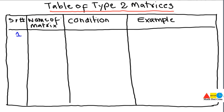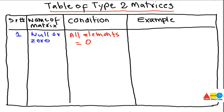Now let's discuss the Type 2 matrices, where we apply operations on the elements of the matrices. The first Type 2 matrix is the null or zero matrix. The condition is that all elements or entries must be equal to zero. It is denoted by O. A null matrix can be of any order — the order is not restricted. All its elements equal zero.